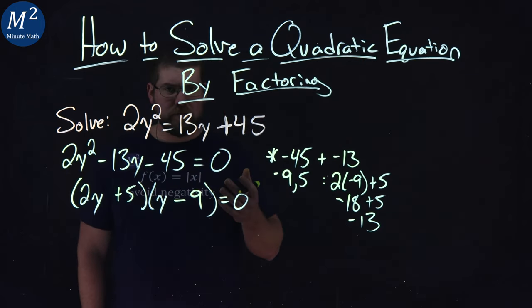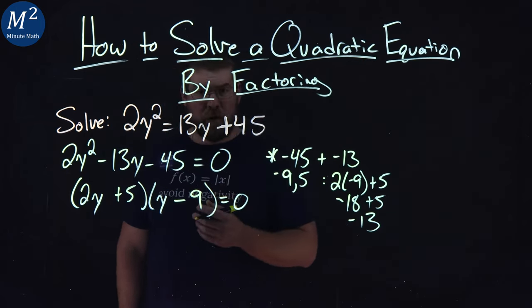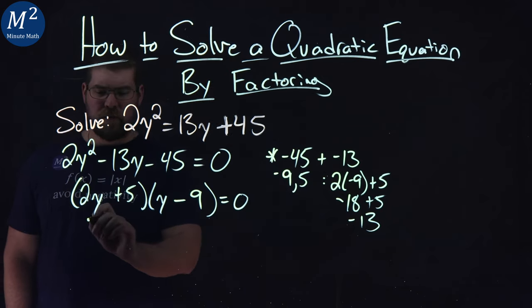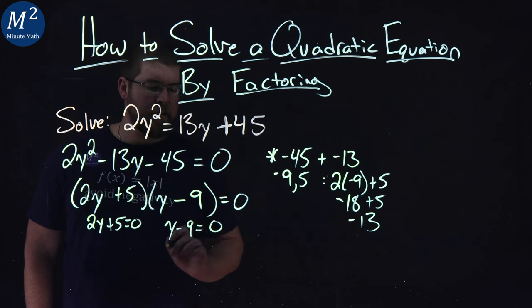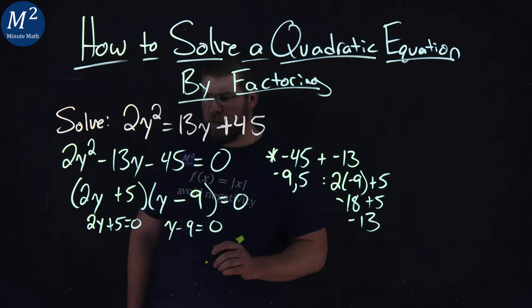Now we can use the zero product property here and set both parts equal to 0. 2y plus 5 equals 0, and y minus 9 equals 0.